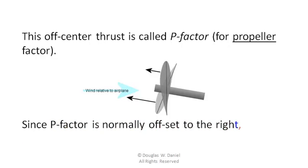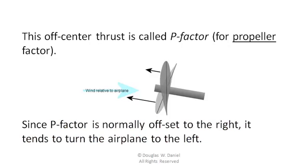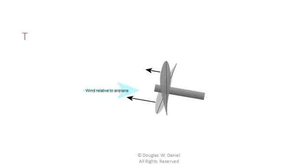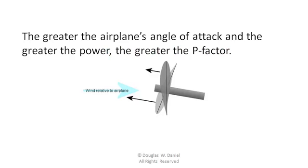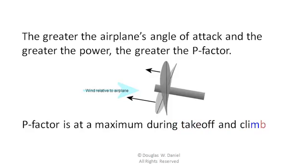This off-center thrust is called P-Factor for propeller factor. Since P-Factor is normally offset to the right, it tends to turn the airplane to the left. The greater the airplane's angle of attack and the greater the power, the greater the P-Factor. P-Factor is at a maximum during takeoff and climb.